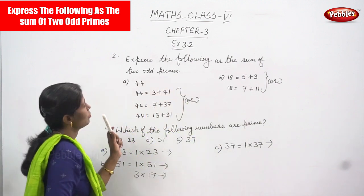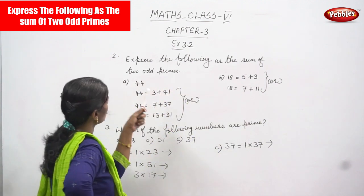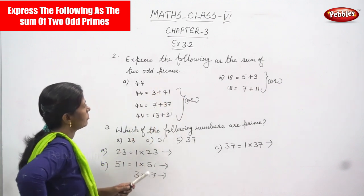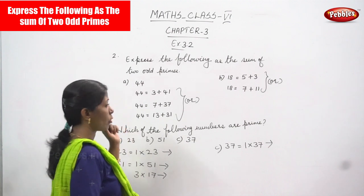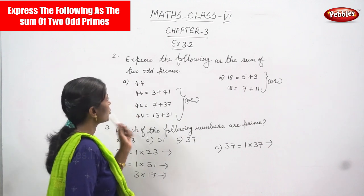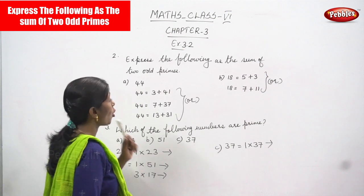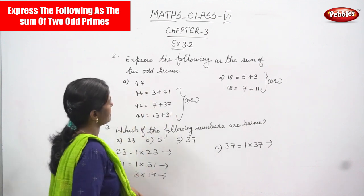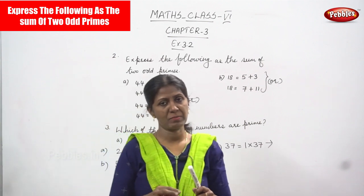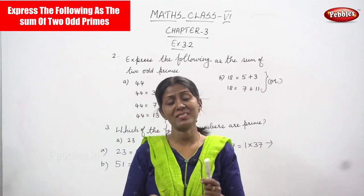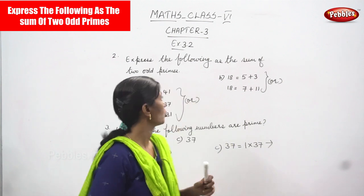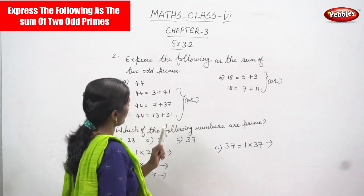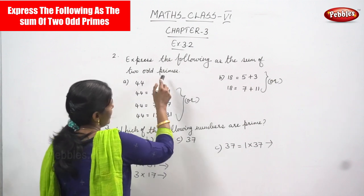Now we are going to see the second sum: express the following as the sum of two odd primes. Look at the first number — 44. You must add two odd prime numbers to get the given number 44.